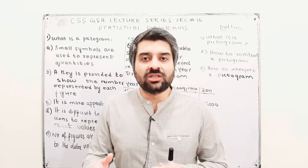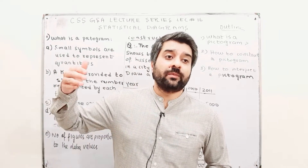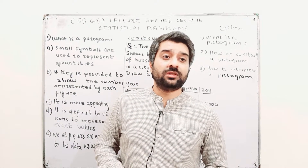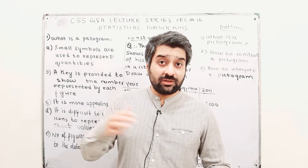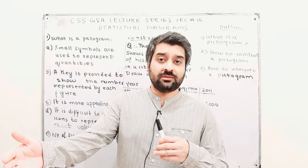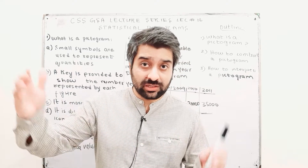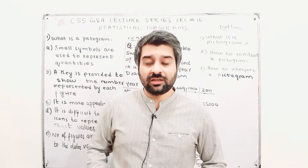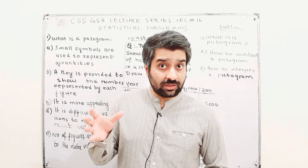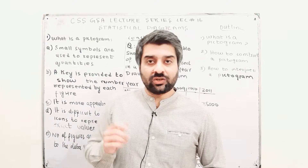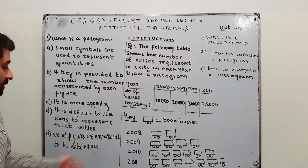There is also continuous data, which is data that falls in a certain range. For example, the height of individuals — they may be 72.5 centimeters, falling between 72 and 73. When your data values fall within a certain range, that is continuous data. Discrete data refers to whole values of something.